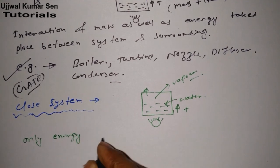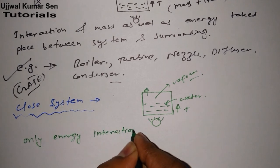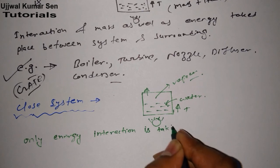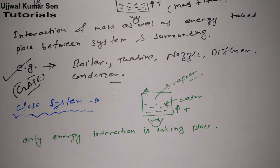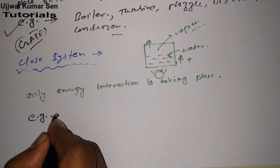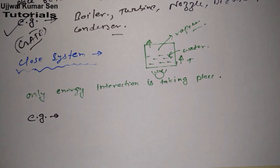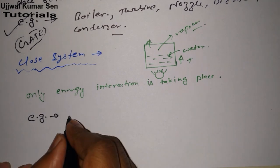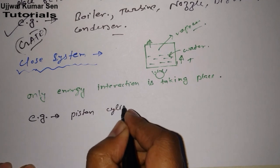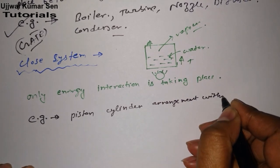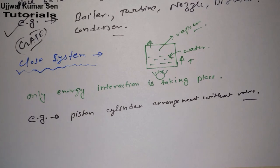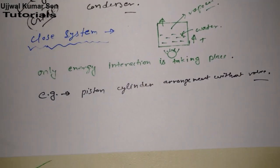The definition of a closed system: only energy interaction takes place between system and surrounding. An example of a closed system is a piston-cylinder arrangement without a valve.